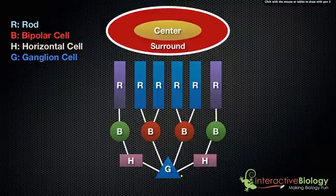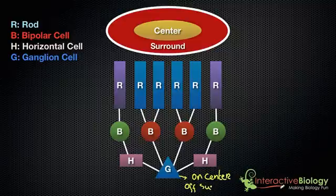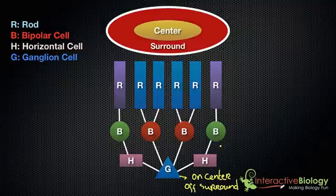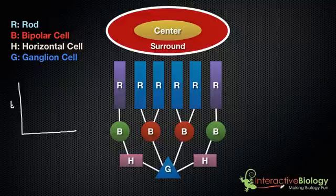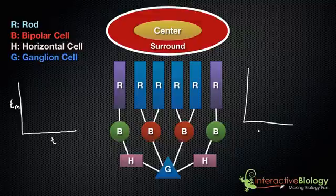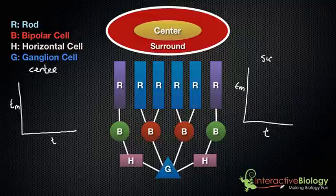Now, if this ganglion cell is considered to be an on-center, off-surround ganglion cell, that's going to give a specific type of response. I'm going to draw a graph that plots membrane potential versus time — one for the center, showing when rods in the center of the receptive field are stimulated, and one for the surround.